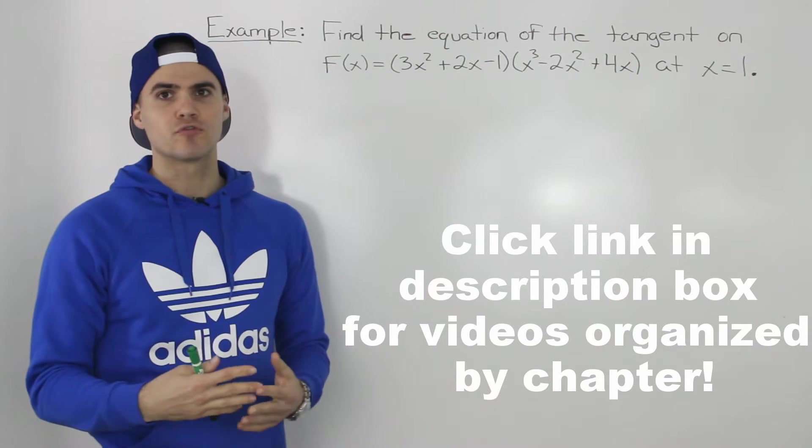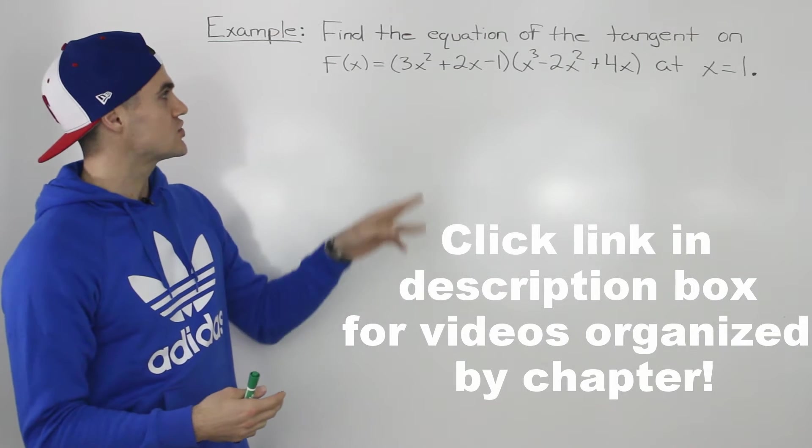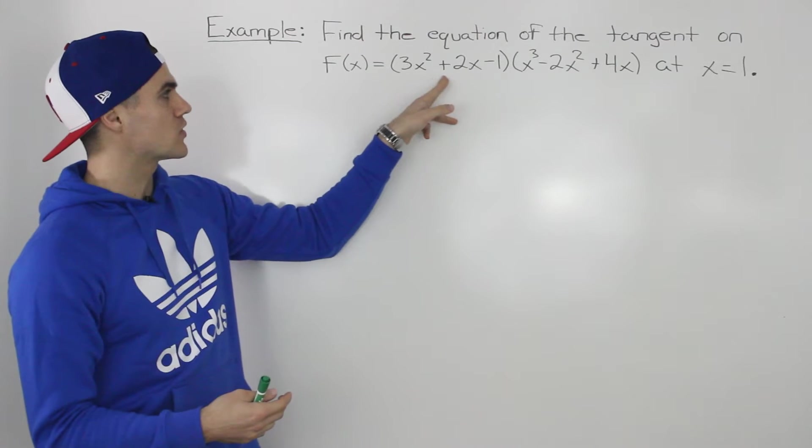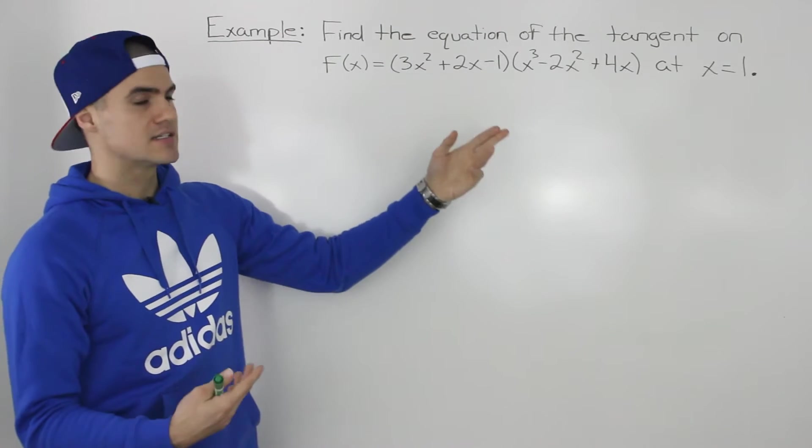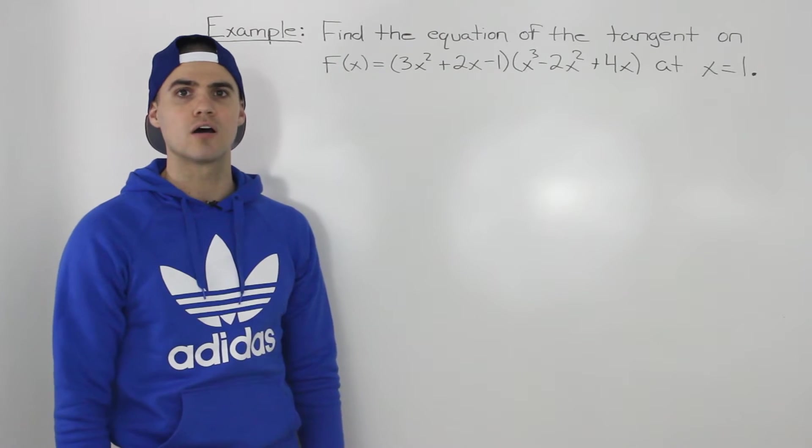What's up everyone? Moving on to an example for the product rule of derivatives, we have to find the equation of the tangent on the function 3x squared plus 2x minus 1 times x to the power of 3 minus 2x squared plus 4x at an x value of 1.